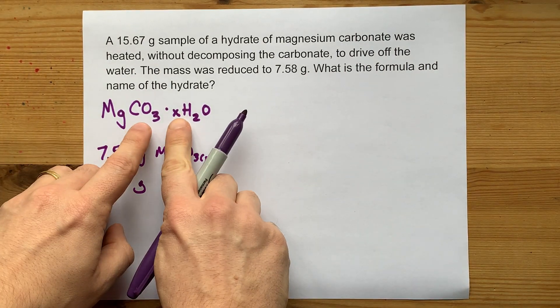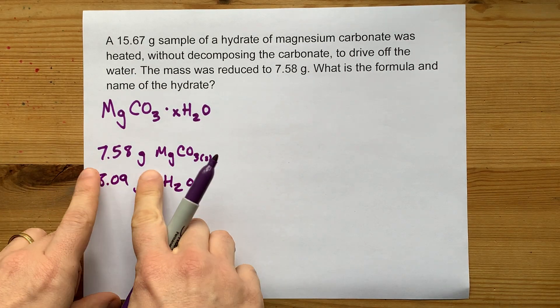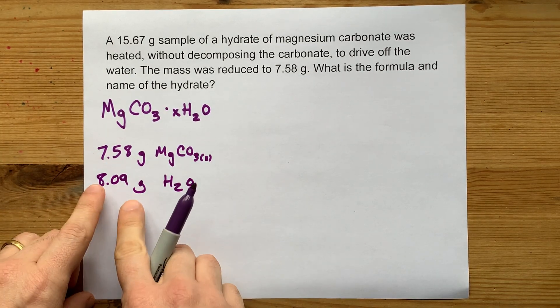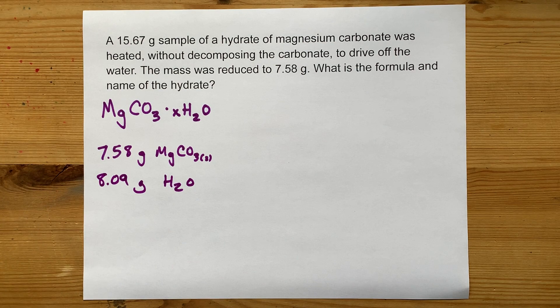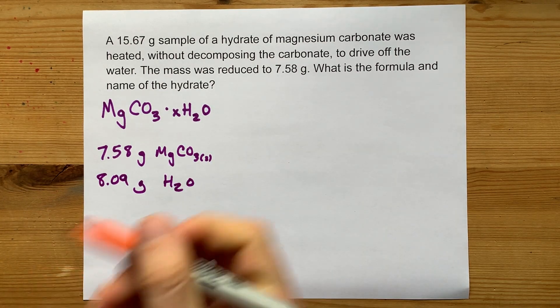The key to solving for x here is to figure out how many moles this is and how many moles this is. Then we'll be able to figure out the ratio between the two.